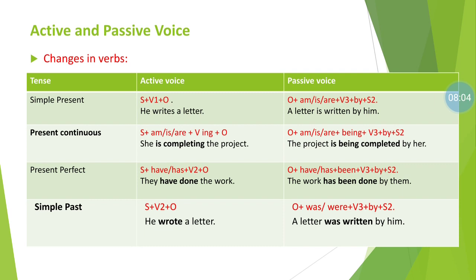Number one: simple present tense. The active structure is subject + V1 + object. For example, 'He writes a letter' — V1 is used, so this is active voice. To transfer to passive, the structure becomes: object + am/is/are + V3 + by + subject (second form). For example, 'I write a letter' becomes 'A letter is written by me.' These are the changes while transferring simple present tense from active to passive.